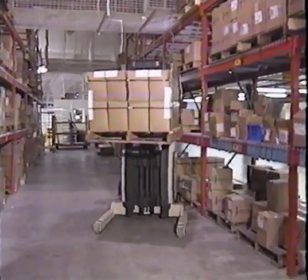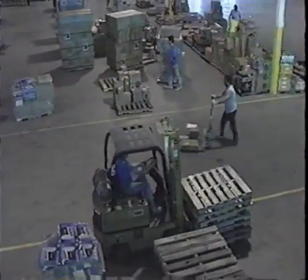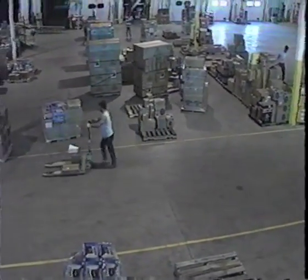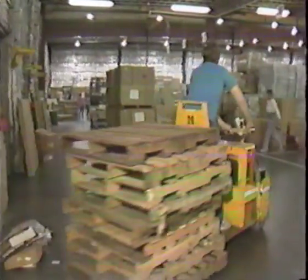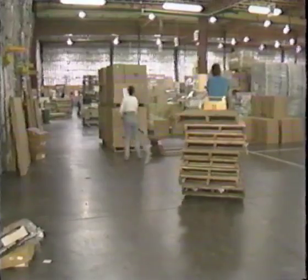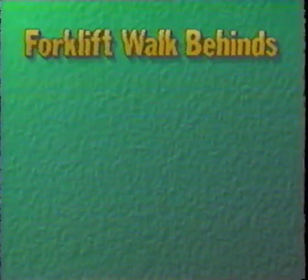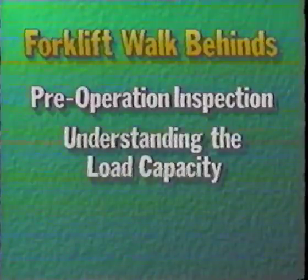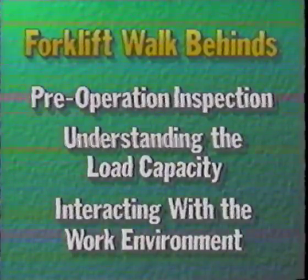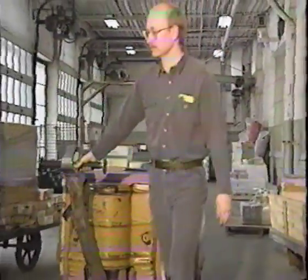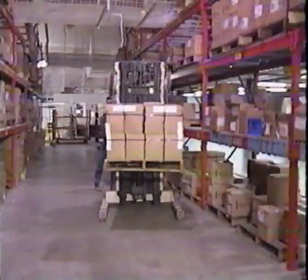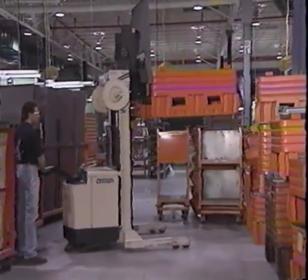Walk-behind forklifts are used for moving items short distances and working in tight areas that conventional forklift trucks are unable to reach. Both the busy environment walk-behinds operate in and the task of moving large, sometimes bulky materials present dangers if safe work practices are not followed. In this program, we will look at safe operating procedures for forklift walk-behinds, including pre-operation inspection, an understanding of load capacity, and interacting with the work environment. Walk-behinds or motorized hand trucks include a wide variety of vehicles designed for specific situations in the workplace. Although they vary in size, shape, and function, the principles for safe operation are the same.